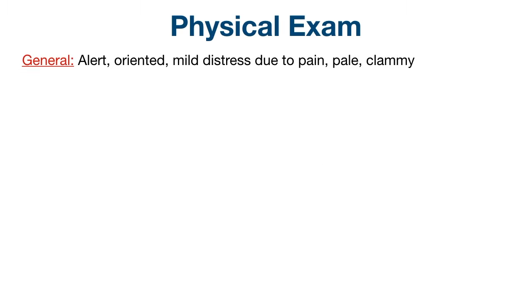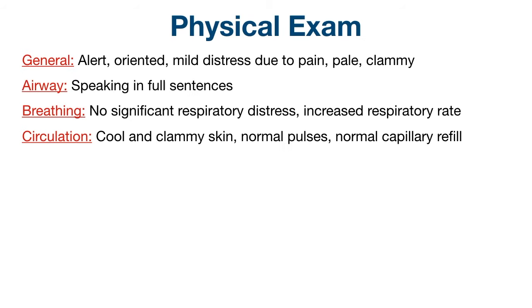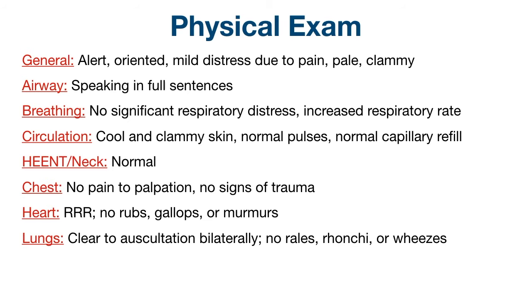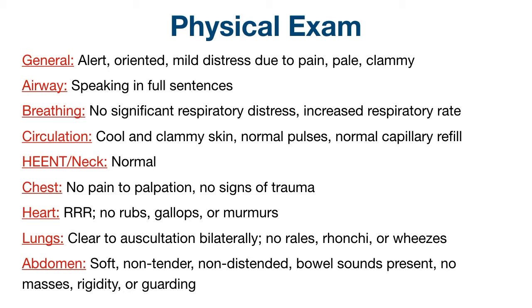When you walk in the room, you see a 68-year-old man who is alert and oriented, is in mild distress due to pain, and appears pale and clammy. His airway is intact and he is speaking in full sentences. His breathing shows no significant respiratory distress but does have an increased respiratory rate. His circulation shows cool and clammy skin, with normal pulses and capillary refill. His head and neck exam is normal. He has no reproducible pain to palpation of his chest and no signs of chest trauma. His heart is regular rate and rhythm without rubs, gallops, or murmurs. His lungs are clear to auscultation bilaterally, and his abdomen is soft, non-tender, non-distended, and without signs of trauma. Bowel sounds are present, no masses, and no rigidity, rebound tenderness, or guarding present.